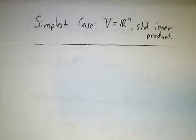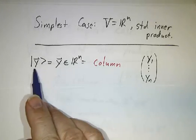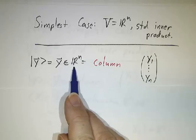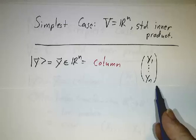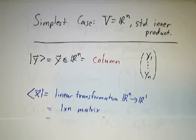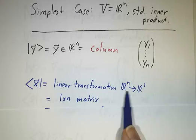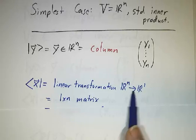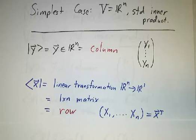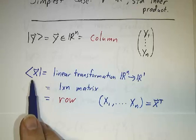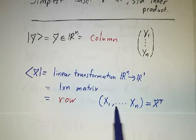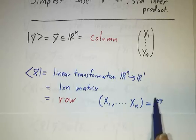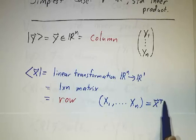The simplest case is Rn with the standard inner product. Then y is an element of Rn and vectors are columns — not rows. Now x is a linear transformation from Rn to R, written as R1. A map from Rn to Rm is represented by an m by n matrix, so here we get a 1 by n matrix — in other words, a row. So the bra x is x written as a row: x1, x2, x3 up to xn. You take the vector x, which is a column, and take its transpose to get the bra.